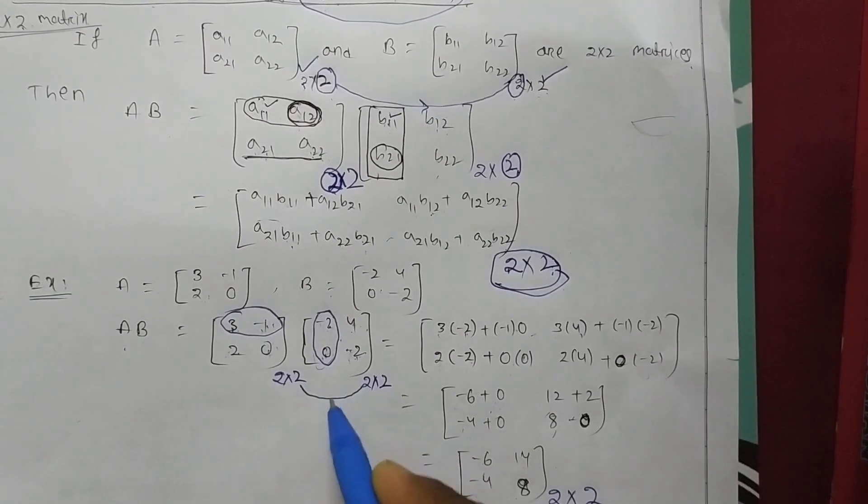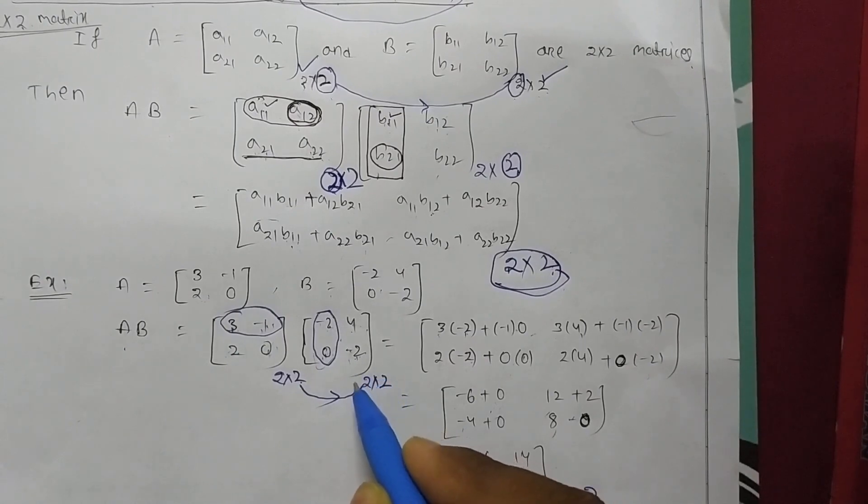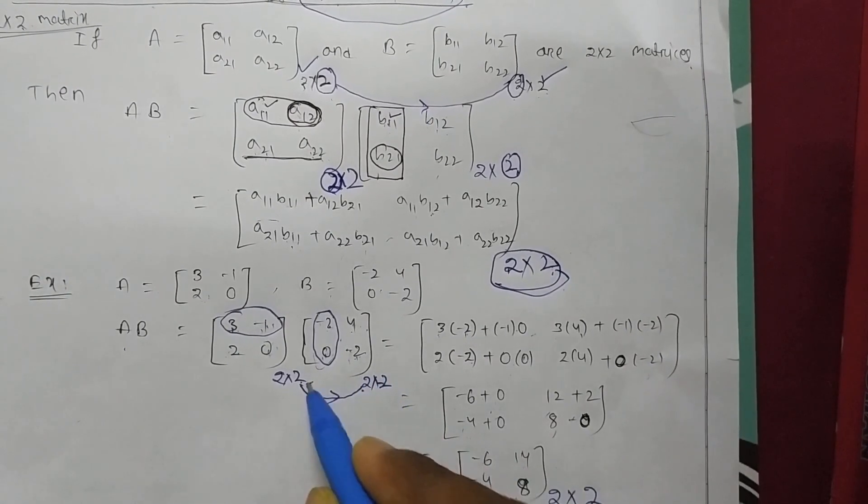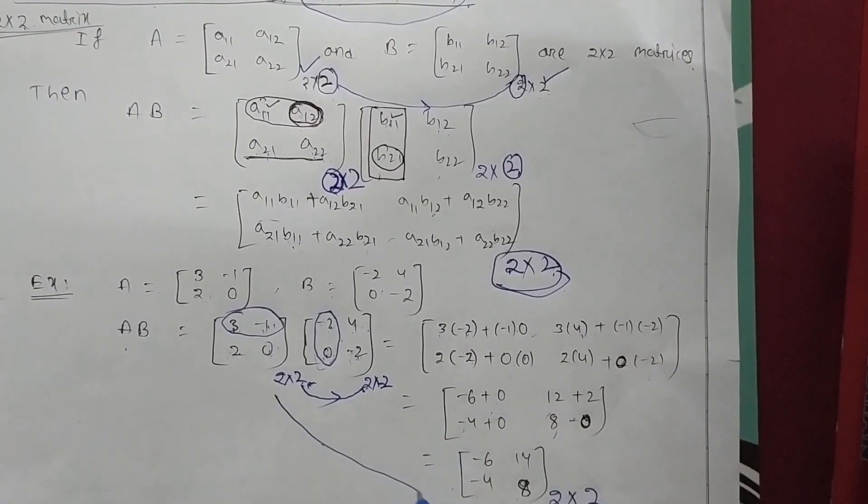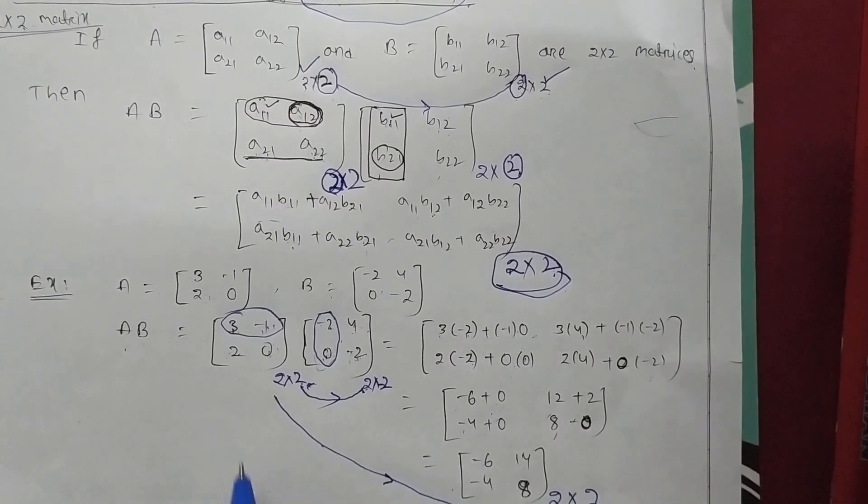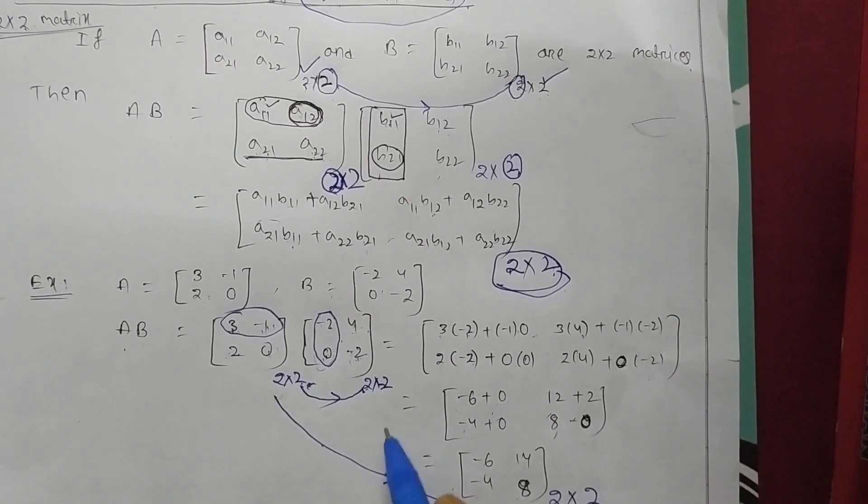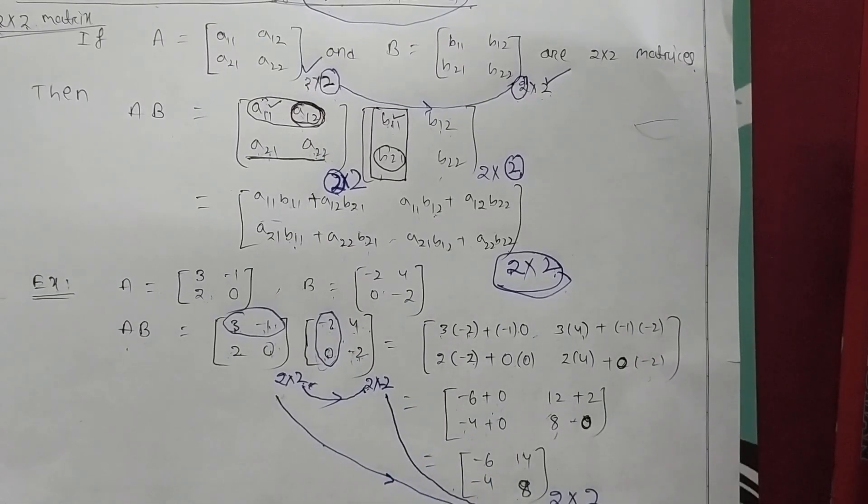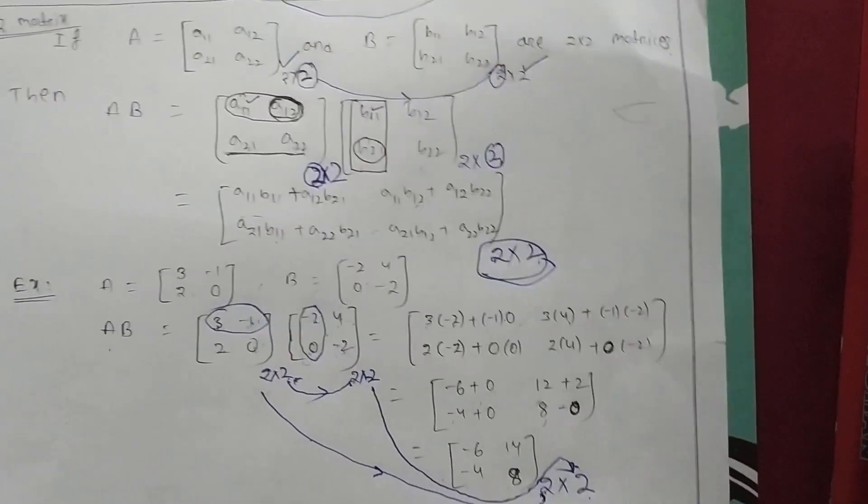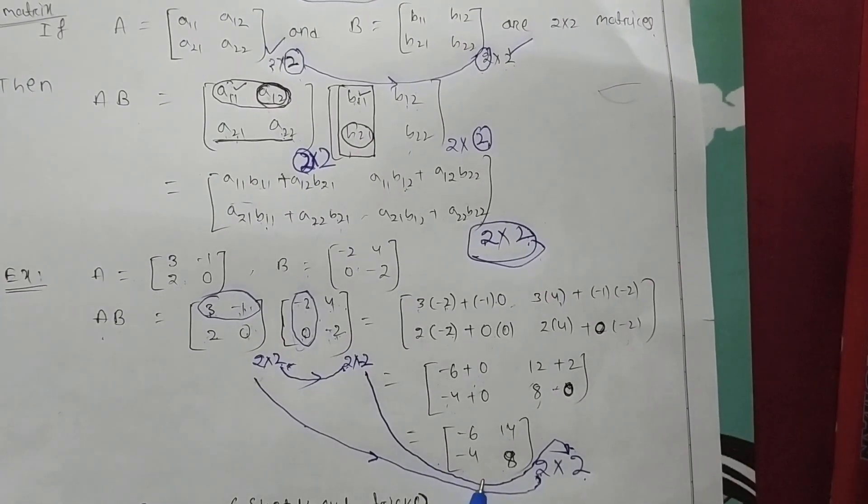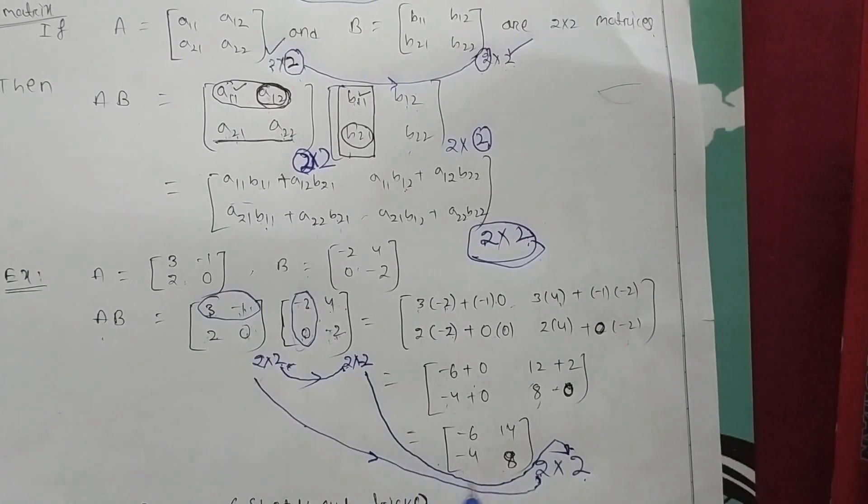Otherwise multiplication is not possible. And order what you are getting: the number of rows of first matrix is number of rows of product matrix, and number of columns of second matrix is the number of columns of product matrix. Understood the multiplication procedure and how to get the order?